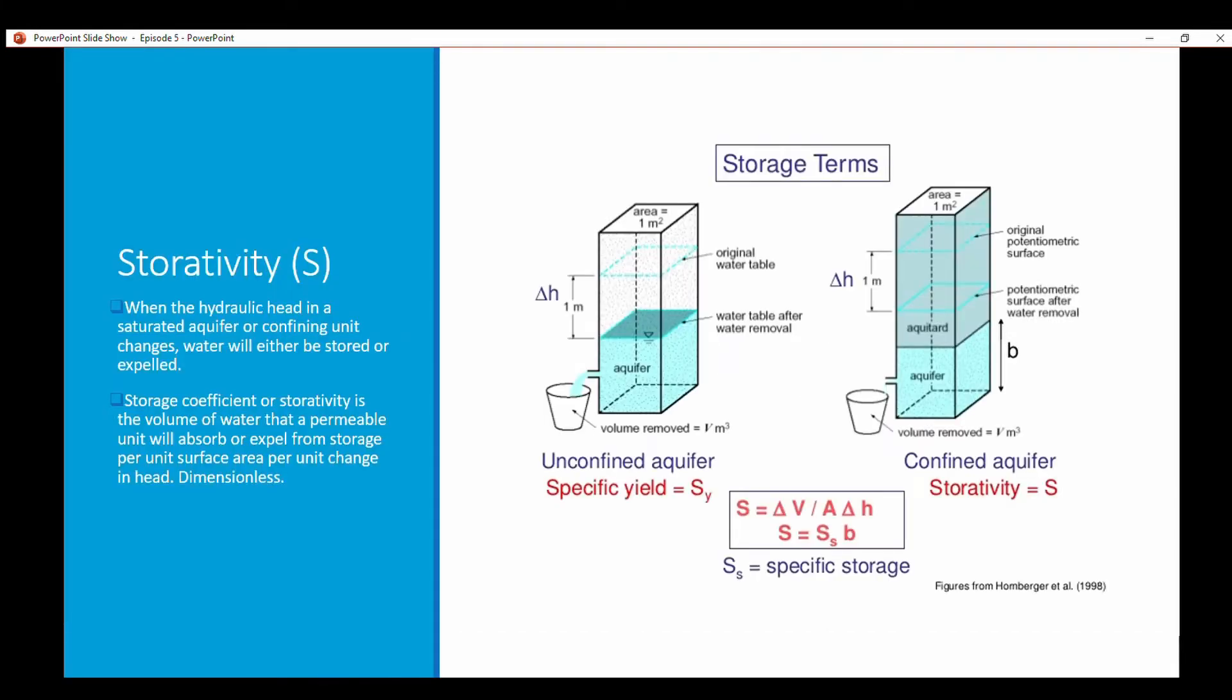Storativity. So when the hydraulic head in a saturated aquifer or confining unit changes, water changes and the pressure water will either be stored or expelled. The storage coefficient or storativity is the volume of water that a permeable unit will absorb or expel from storage per unit surface area per unit in head, so it's dimensionless. For an unconfined aquifer, storage is going to equal specific yield. In a confined aquifer you have storativity.